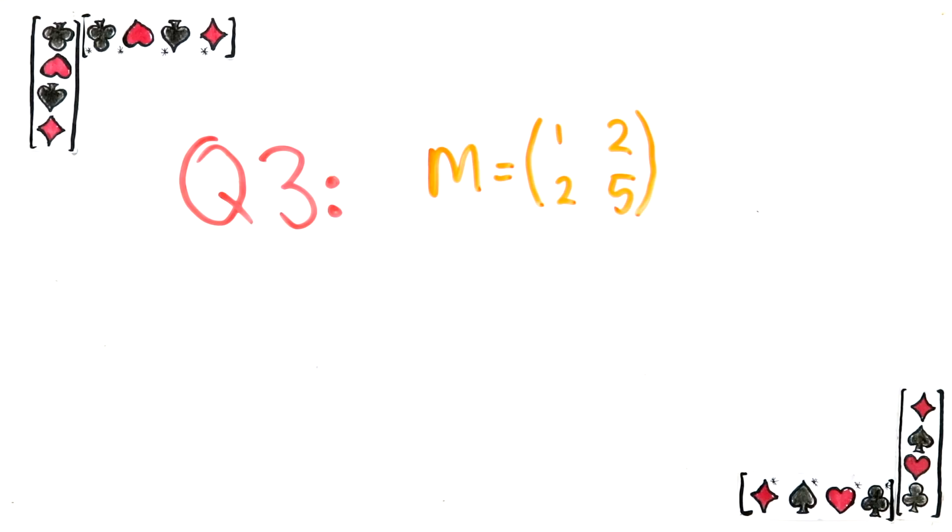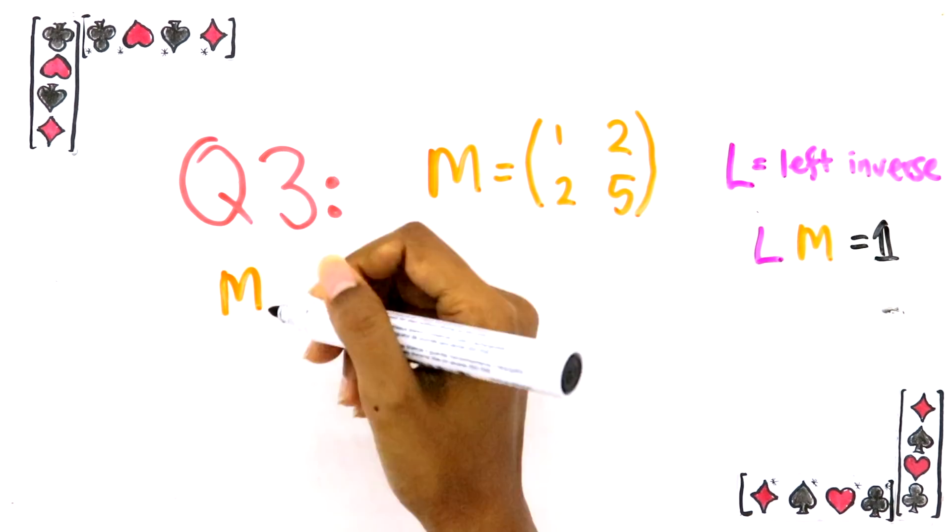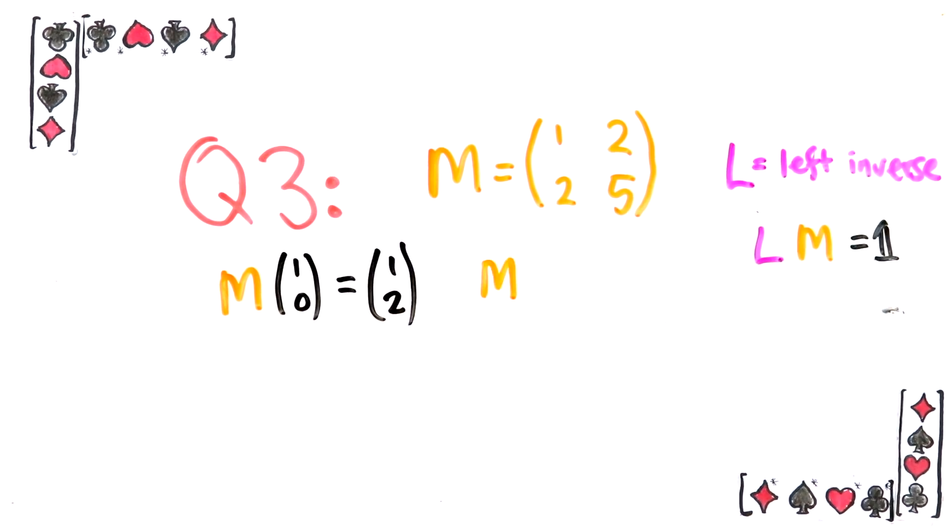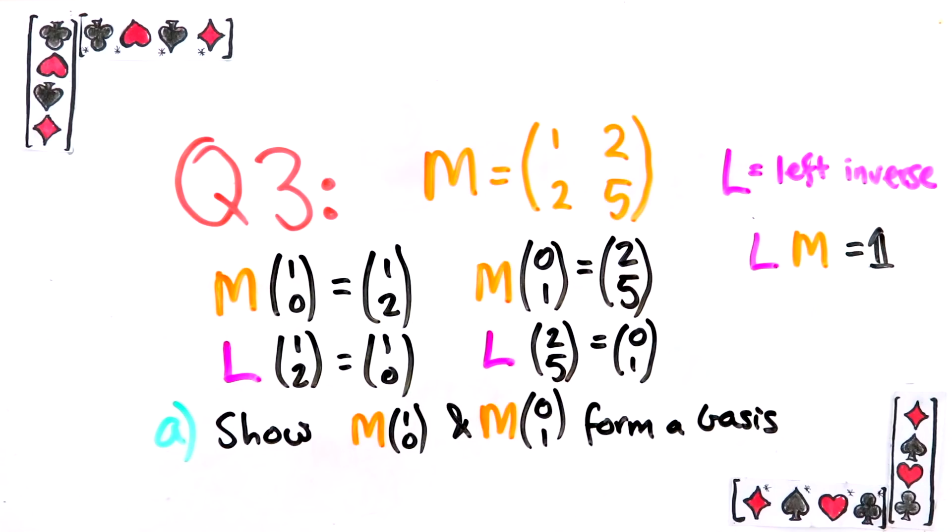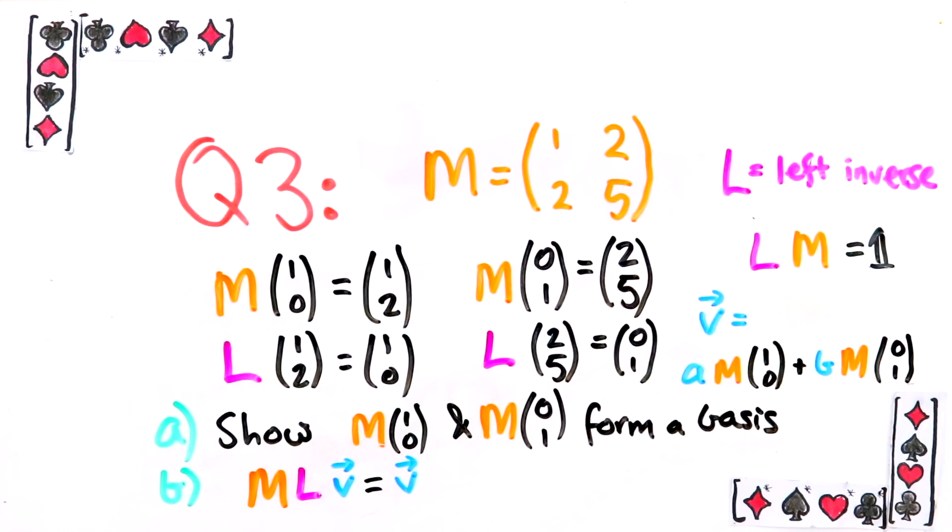Suppose we have this matrix from before. If we have a left inverse for it, L, then we know L undoes M. We also know that M takes the basis vectors to these vectors, so L must take them back. First show that these two new vectors form a basis. Then to show that M undoes L, we need to show that for any vector V, if you apply L and then M, you get V back. Show this by writing V as a linear combination of the basis in the first part. Hopefully doing this will help you with your proof in question too.